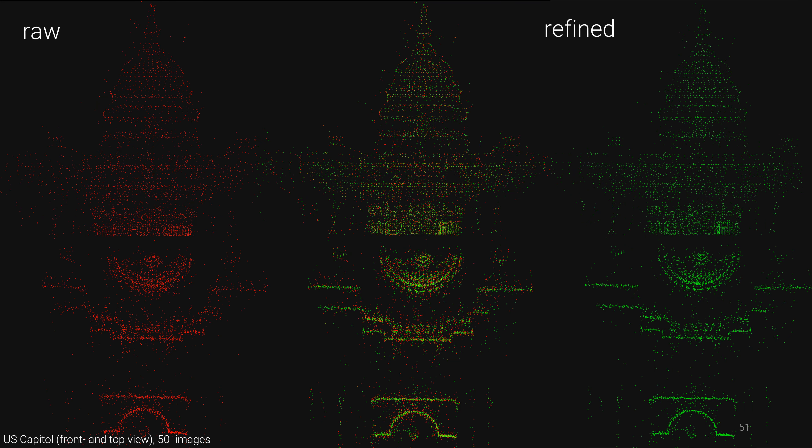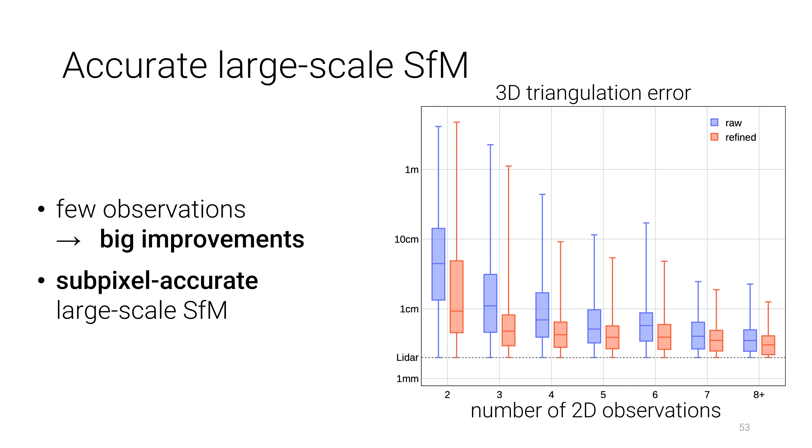Here is another example of the US Capitol, where our system triangulates many more points which are also more accurate. The proposed pipeline yields close to LiDAR accuracy and greatly improves points with only a few observations, enabling sub-pixel accuracy in large-scale SFM.